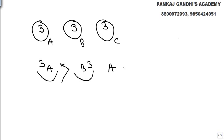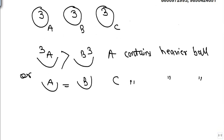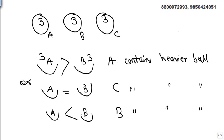If A goes down, it means A contains the heavier ball. Since eight balls are of equal weight and only one is heavier, if A and B are equal, the heavier ball is neither in A nor in B — so C contains the heavier ball. And if B goes down, then B contains the heavier ball.